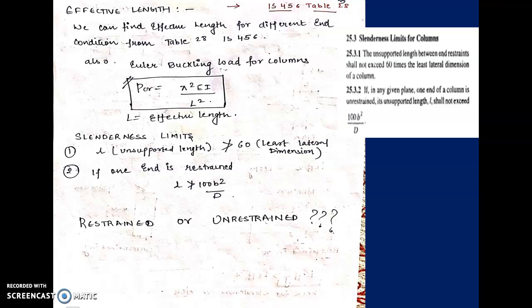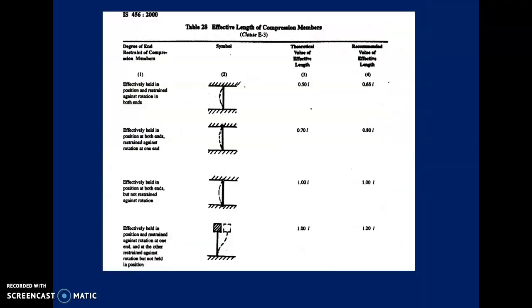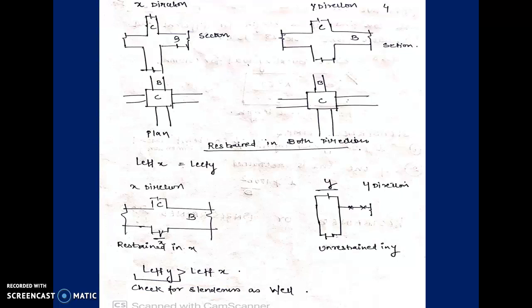What is restrained versus unrestrained? Effectively held or hinged — this is made clear in the table. Now, this point is very important: in the first figure in the x-direction, there is a column with a beam passing through it in the x-direction. Similarly, in the y-direction a beam passes through in the y-direction. So there is a beam in both directions of the column.